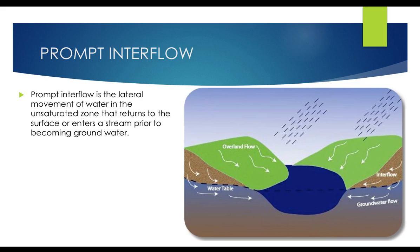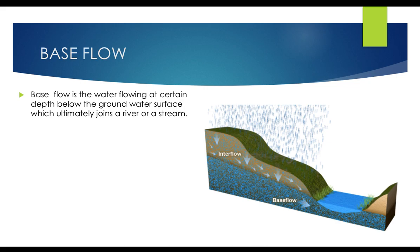Next — interflow. We have seen that water gets infiltrated into the soil. But through some loose fractures, the water escapes back into the stream or river, and again comes back to the groundwater table. Interflow is the lateral movement of water in the unsaturated zone that returns to the surface or enters the stream prior to becoming groundwater.